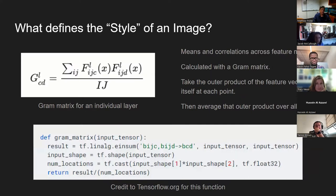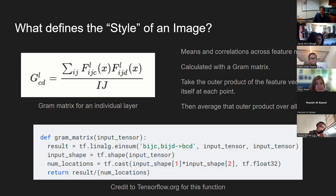What defines the style? That's a bit more complicated. Thanks to Gatys et al., and also TensorFlow for providing this gram matrix function — it's basically the means and correlations across all the different feature maps. You take the outer product of these feature vectors with itself at each point, and then take the average of that over all the points. And somehow that is the style.